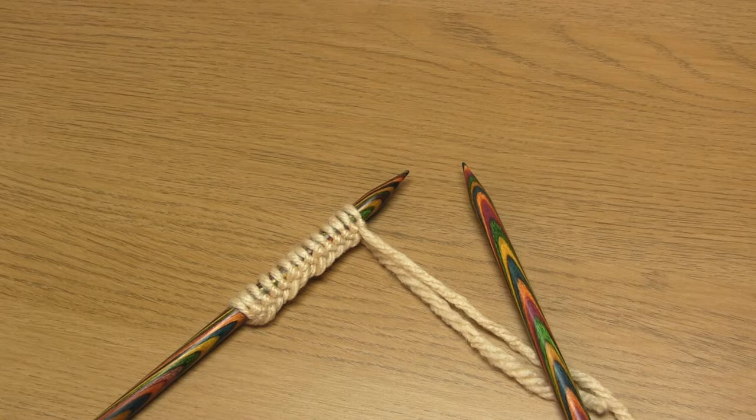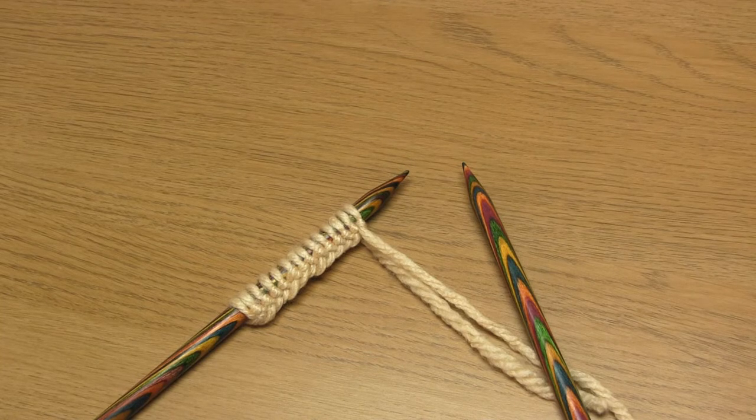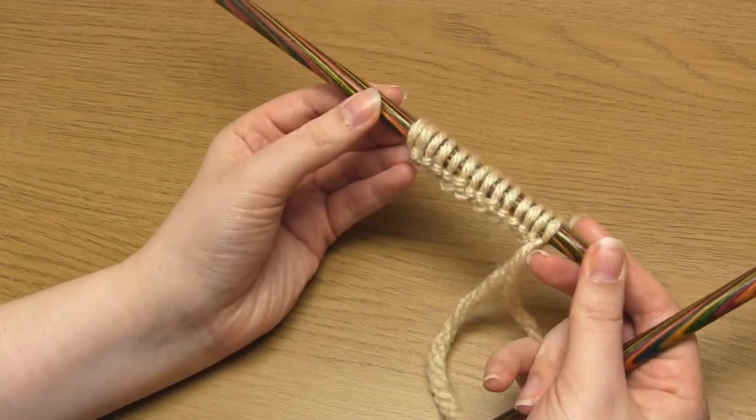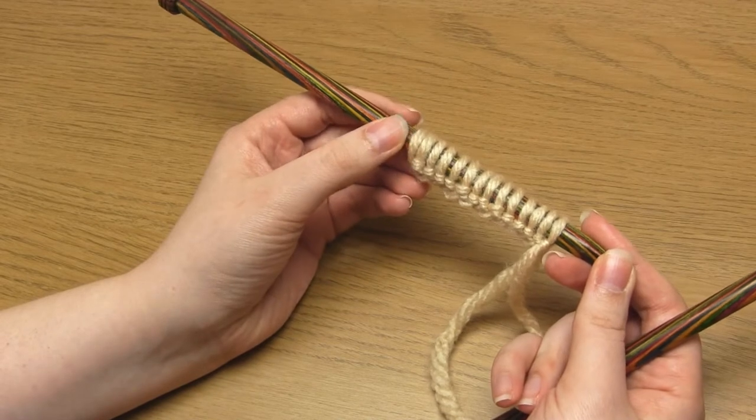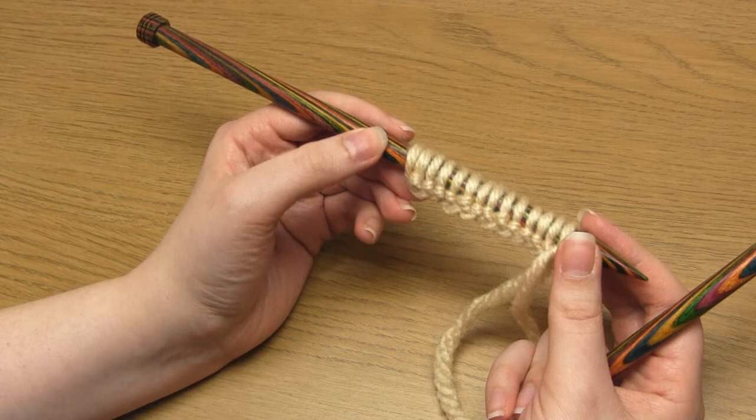Right, so to begin you just need to cast on a multiple of four stitches plus two. I've cast on 14. I did this using the long tail cast on but you can just use your favorite method. This is a four row pattern repeat and the resulting knitting will be symmetrical.